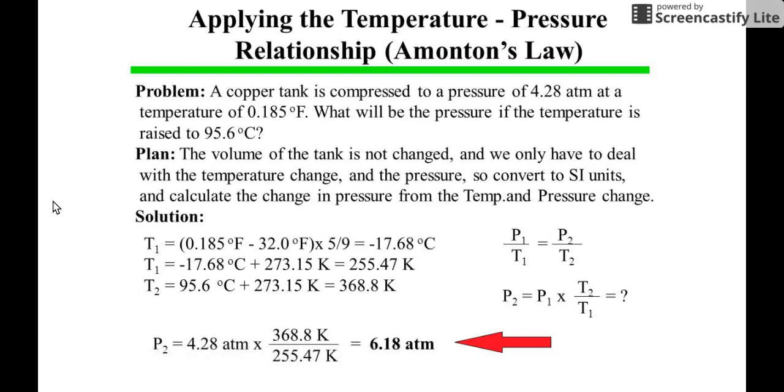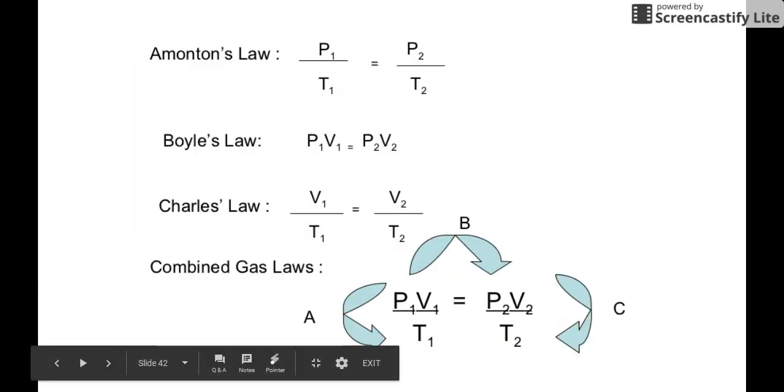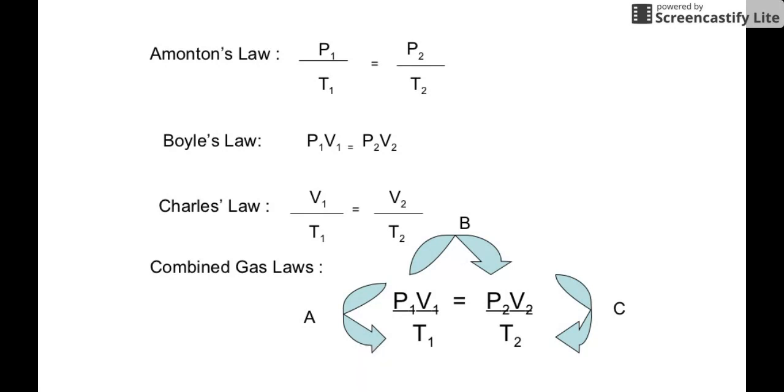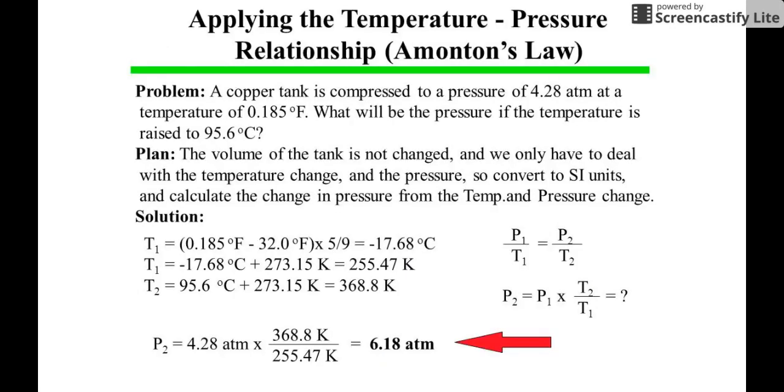Your P1 is 4.28. Let me use my pointer. You are given here P1, and this is your T1, and this is your T2.